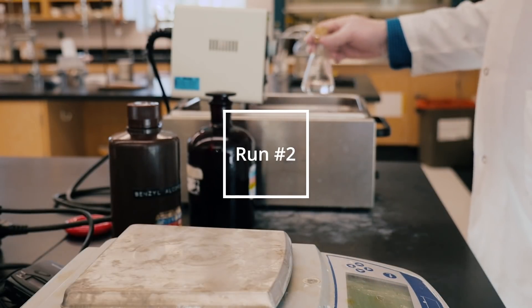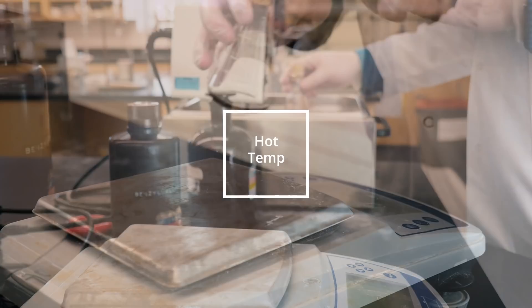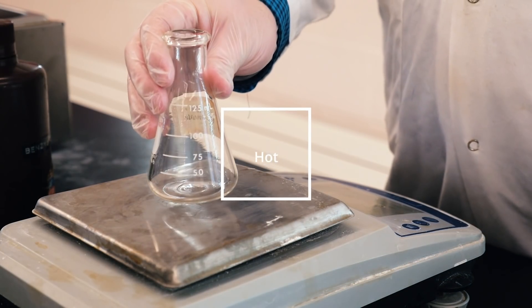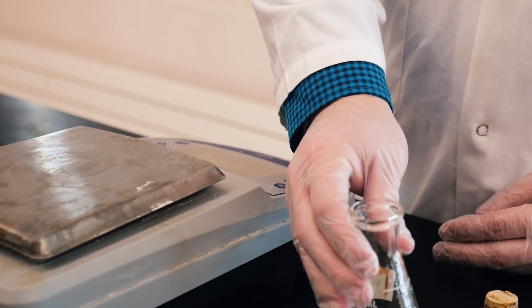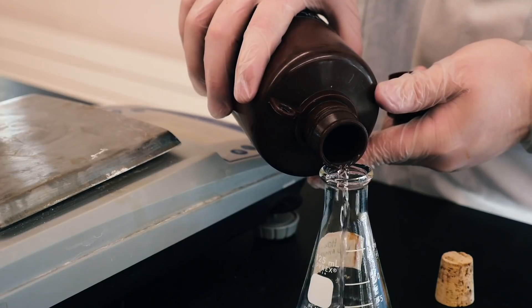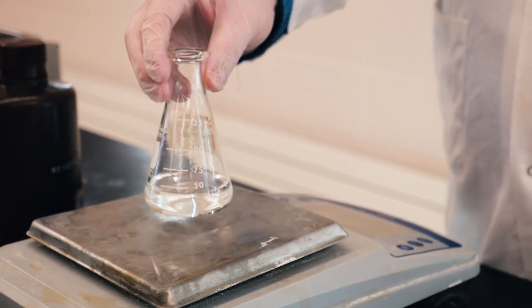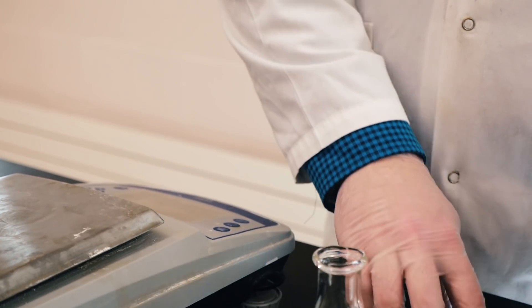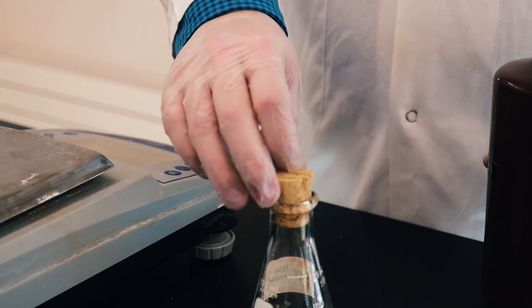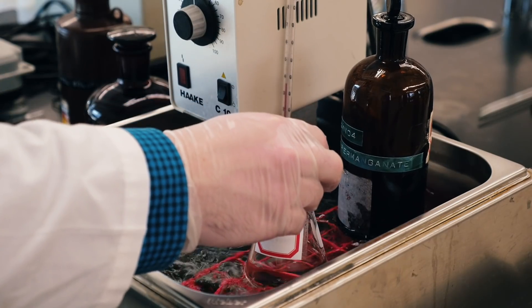During a break between measurements, you can get started on run number 2, which is the hot one. The only difference between run number 1 and number 2 is the temperature at which the reaction takes place. For run number 2, again weigh out 45 grams of benzyl alcohol solution, but this time into a smaller 125 mL Erlenmeyer flask. Then you can immerse your flask into the hot water bath and allow it to heat up for about 15 minutes.